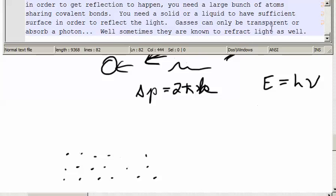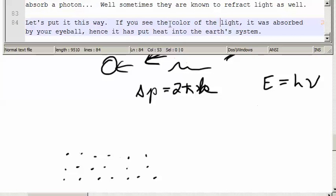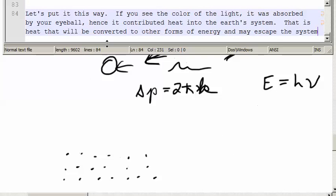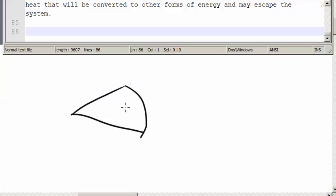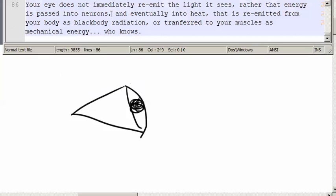Gases can only be transparent, or absorb a photon. But then I started thinking about it, sometimes they are known to refract light as well. So, let's just put it this way. If you see the color of the light, it was absorbed by your eyeball. Hence, it contributed heat into the Earth's system. That is heat that will be converted to other forms of energy and may escape the system. When your eye sees that blue light, it does not immediately re-emit the blue light. Your eye does not immediately re-emit the light it sees, but rather that energy is passed into neurons and eventually into heat. That is re-emitted from your body as black body radiation, or transferred to your muscles as mechanical energy.